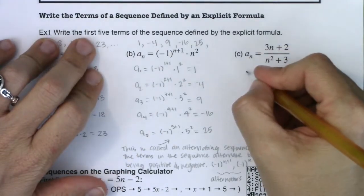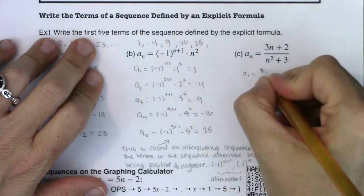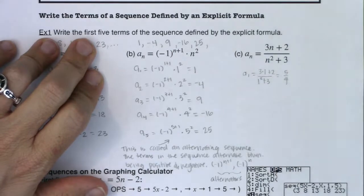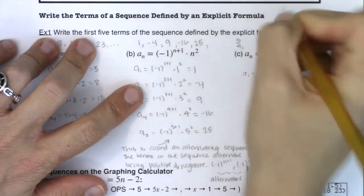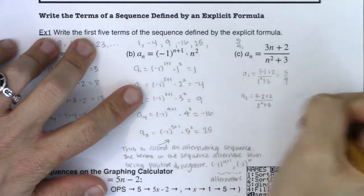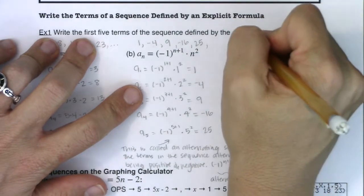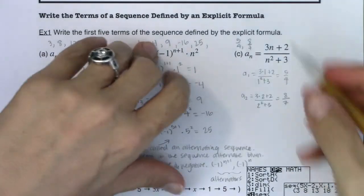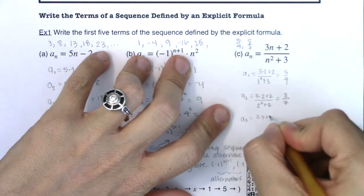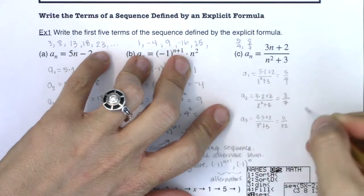Now let's try the rational function. a sub 1 is (3 times 1 plus 2) over (1 squared plus 3), which is 5 over 4, or 5 fourths. a sub 2 is (3 times 2 plus 2) over (2 squared plus 3): 6 plus 2 is 8, and 4 plus 3 is 7, so 8 sevenths. There's no alternator here. a sub 3 is (3 times 3 plus 2) over (3 squared plus 3): 9 plus 2 is 11, and 9 plus 3 is 12, so 11 twelfths.